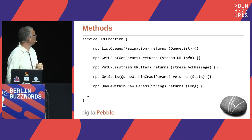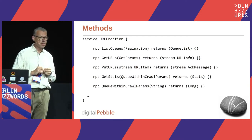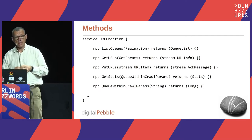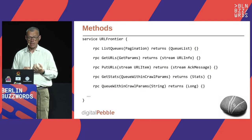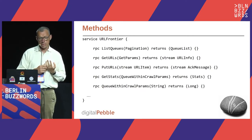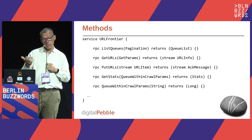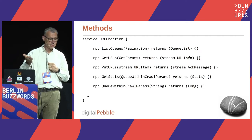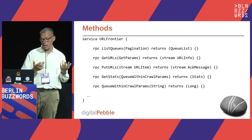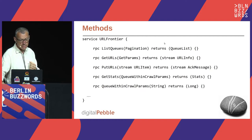Here's a quick overview of some of the other methods defined by the URL Frontier API. You can see things like list queues, where you ask the frontier to give you the list of all queues it has internally. But the two main ones are getURLs and putURLs, where you get stuff in and out of the frontier.